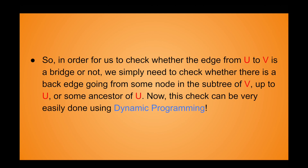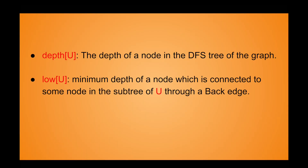This check can be very easily done using dynamic programming, and this is exactly how the 'in' and 'low' arrays come into existence. Instead of using the end time, we'll actually be using the depth and low arrays, where depth[U] stores the depth of a node in the DFS tree, and low[U] stores the minimum depth of a node which is connected to some node in the subtree of U through a back edge. Try to meditate on this definition of low[U] and rewind this video until you're completely sure of it.